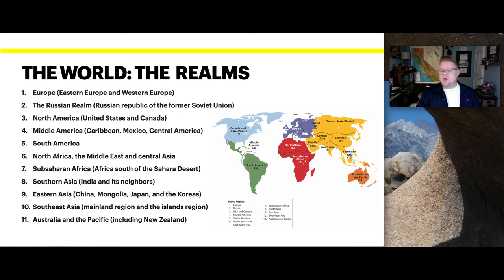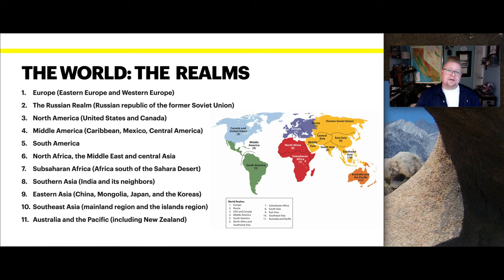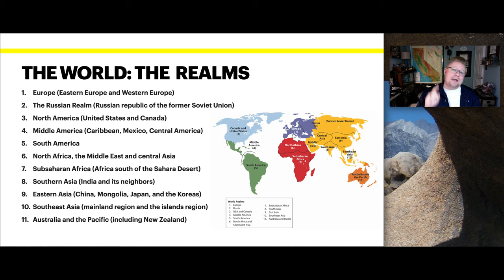Within each realm, we're going to discuss the people, language, population density, culture, overall history, and topography — meaning the landscape. We'll find that landscape plays a role on agriculture, which we'll mention in every single realm because it is a driving force for the economy of many locations, especially given limited resources such as water and fertile land.